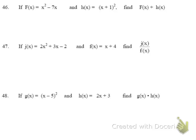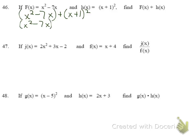For number 46, we add f(x) and h(x): x² minus 7x plus (x + 1) squared. First multiply out (x + 1)² to get x² plus 2x plus 1, then combine like terms: 2x² minus 5x plus 1.